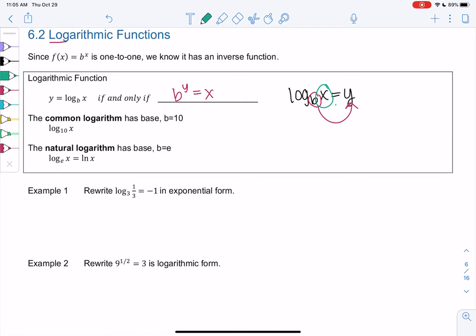The common logarithm has base 10, so we write log base 10 of x. And the one we'll use the most is the natural log. It has base e, and so instead of writing log base e of x, we write this new thing called ln of x.